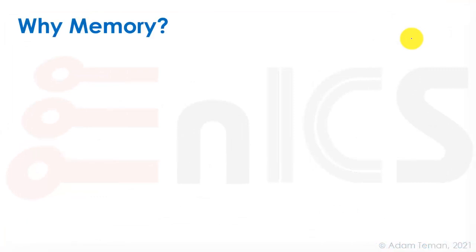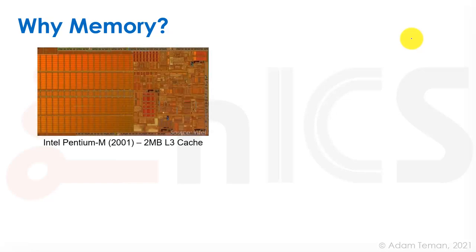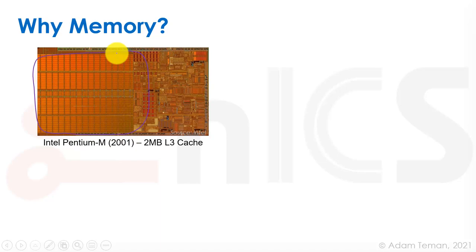Why memory? What's the motivation? Going as far back as 2001, if we look at the Intel Pentium M, you can see the 2 megabyte L3 cache — this whole thing was just a bunch of memory. You can see that memory can really take up 50%, probably much more, of the chip, because a lot of these blocks inside have their own internal memories. Memory is huge; it's actually most of the chip area, responsible for most of the power, and it's often the performance bottleneck.